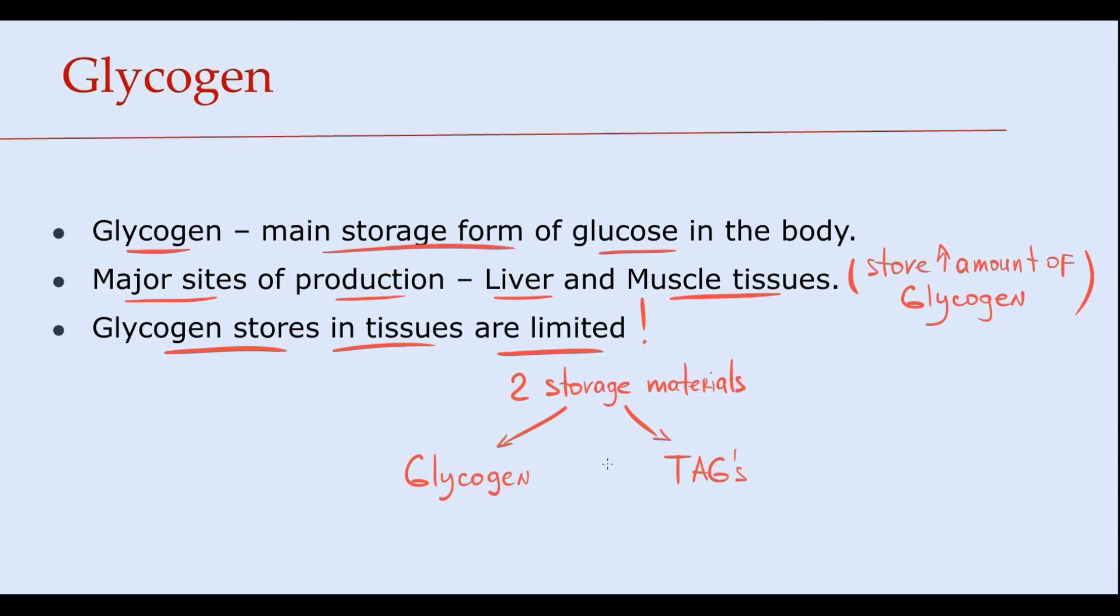So glycogen is not the optimal storage material because it takes a lot of space to store glycogen in the tissue. And because of that, glycogen stores in our body are very limited.